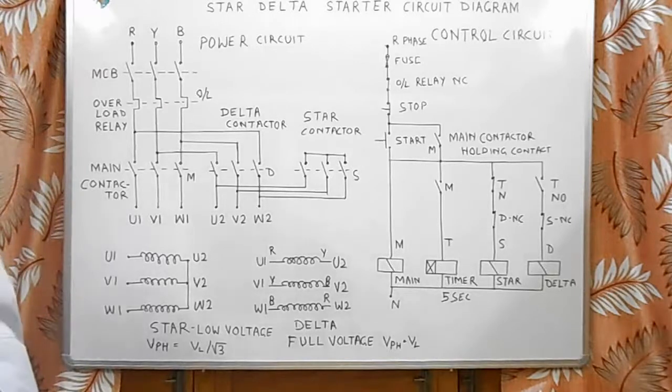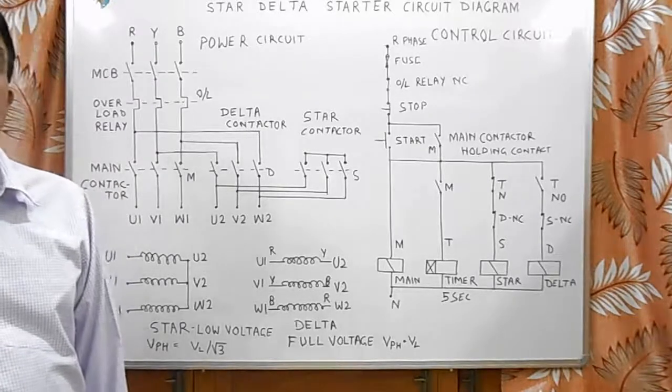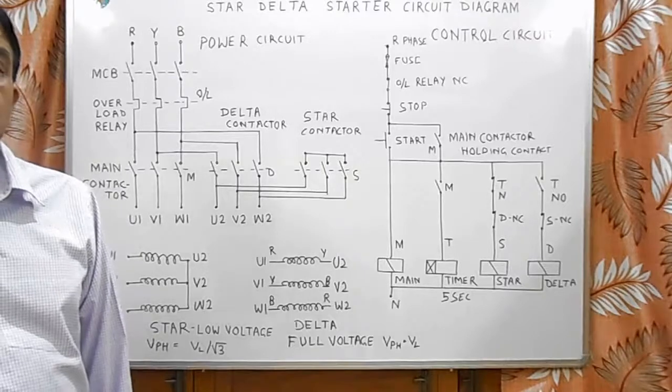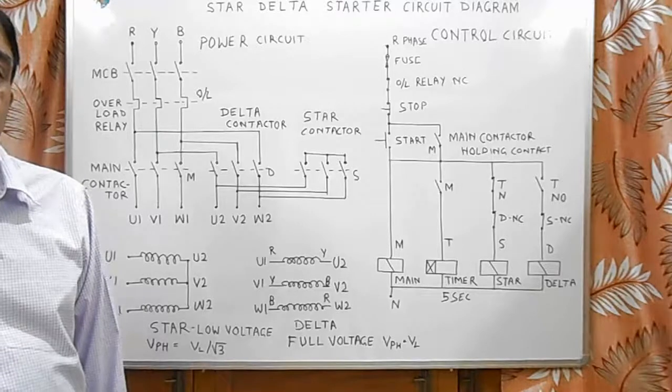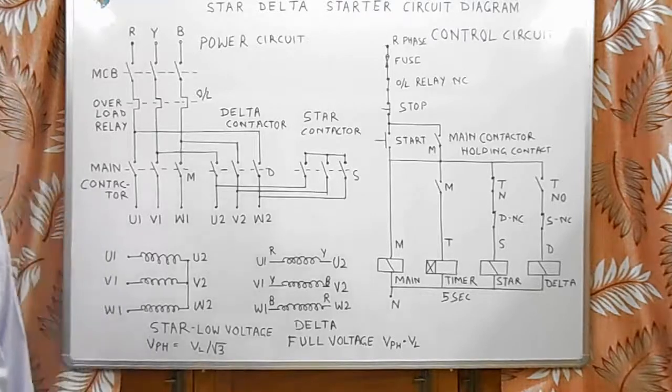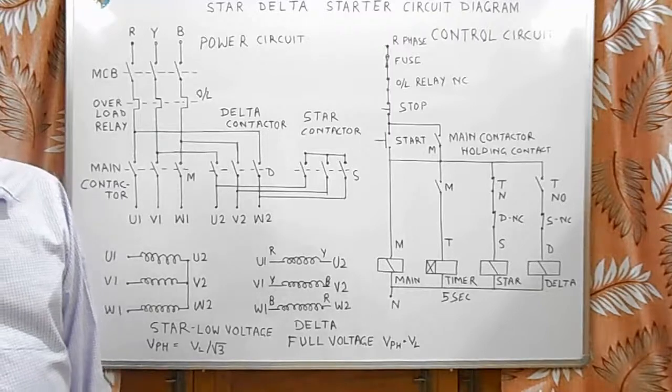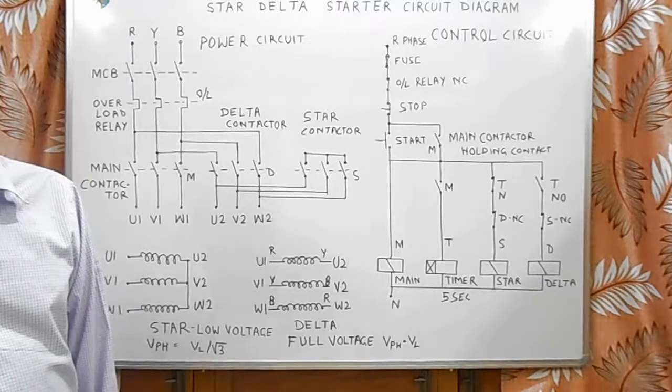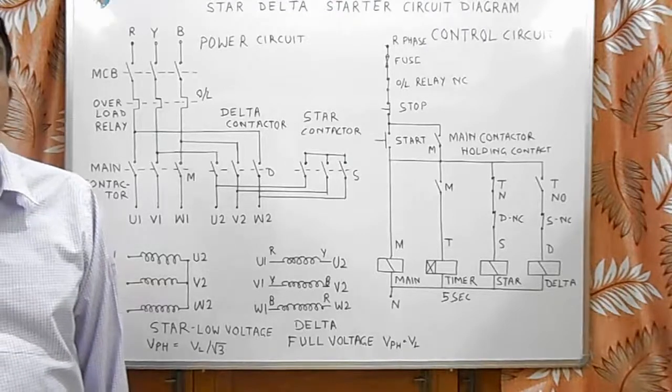I think this circuit is very clear to you. Basic concept of star-delta starter is to start motor with reduced voltage and then run at normal supply voltage. This scheme is suitable for starting motor at no load, but if there is continuous load, this scheme may fail because starting torque at low voltage is very less.